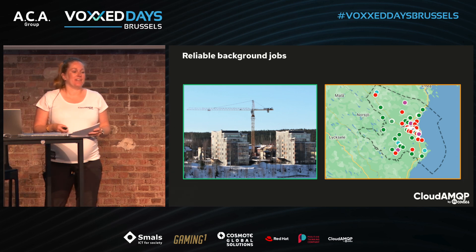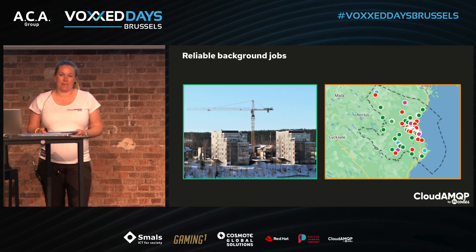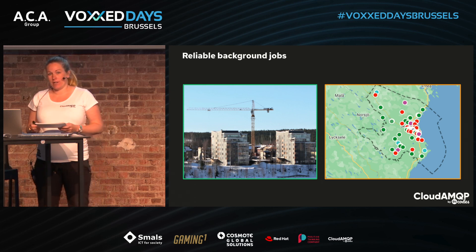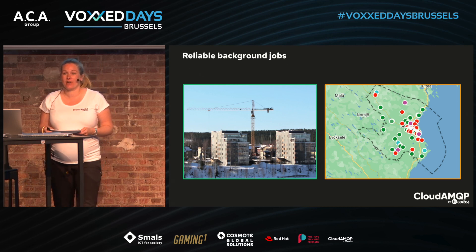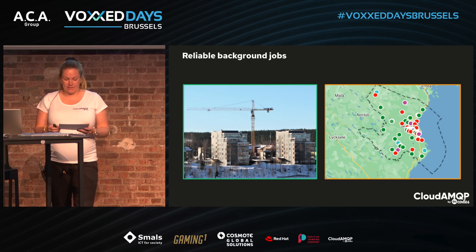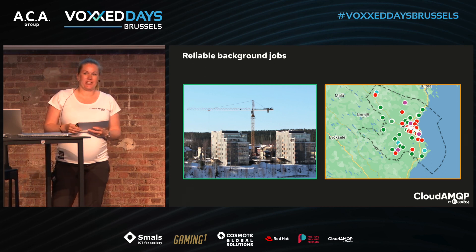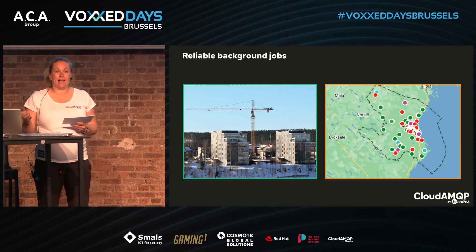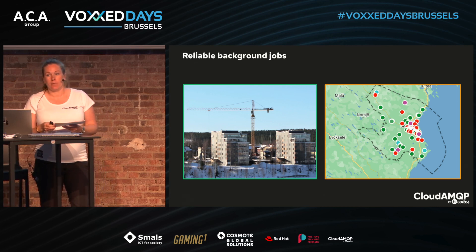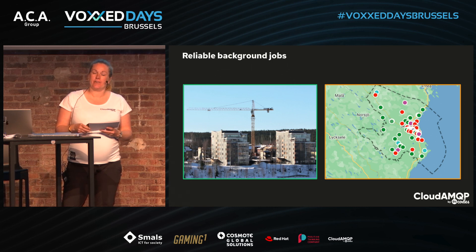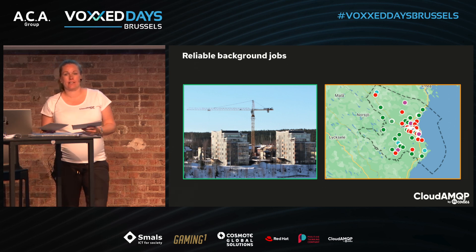One of our customers is a property listing platform who are using message queues exactly the same way as I just described with images. When a real estate broker adds a new property to the platform, a lot of images are involved. Using message queues enables real estate brokers to add many high-resolution images at the same time from many different brokers, and the platform can respond quickly instead of performing those intensive tasks on the spot.